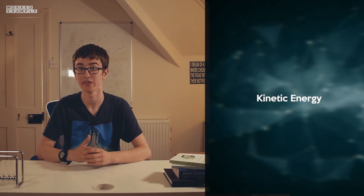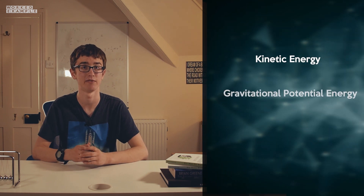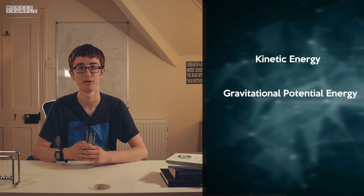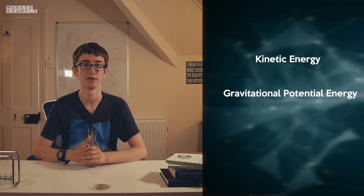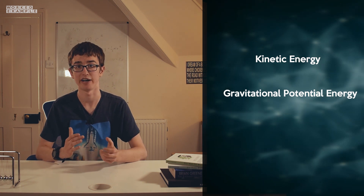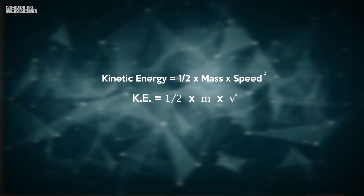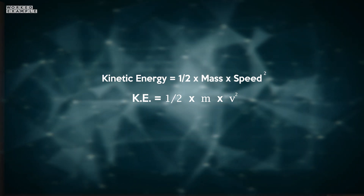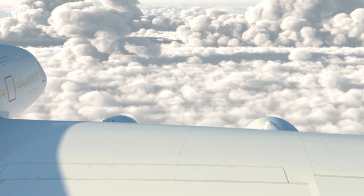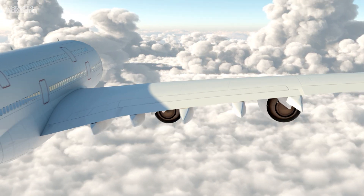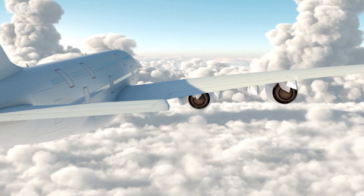Kinetic energy — the energy of moving objects — and gravitational potential energy — the energy of objects above the ground — are highly interchangeable. The kinetic energy of an object is equal to half times its mass times its speed squared. If we increase the speed or the mass of the moving object, its kinetic energy increases, so a high-speed airplane has much more kinetic energy than a snail.